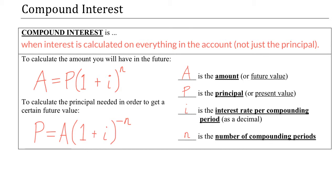I want to talk about the compounding period. The compounding period refers to how many times each year the interest is calculated. You can calculate the interest annually, semi-annually, monthly, weekly, or daily — it depends on what investment or loan you're talking about.